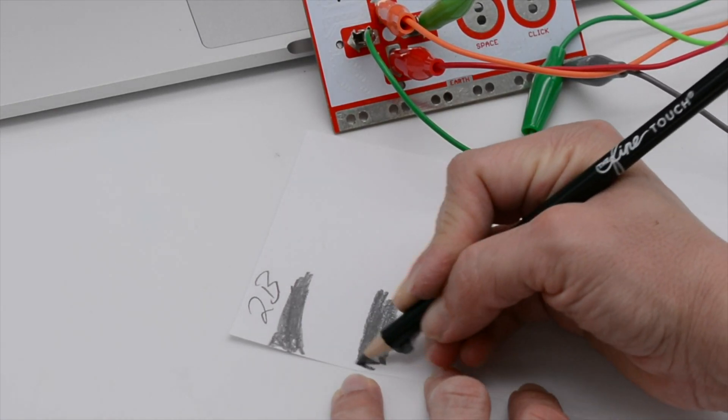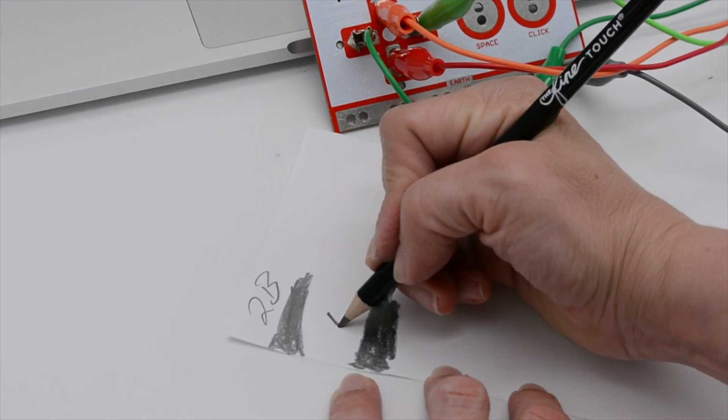Most pencils you have are 2B. Now I'm going to try a 4B pencil. Let's see if it looks any different. I'm making really thick, neat, dark lines because that works best with Makey Makey.